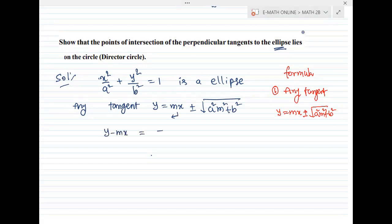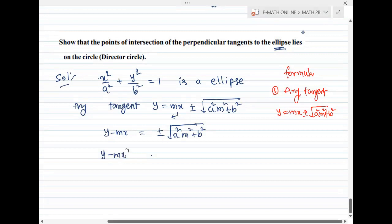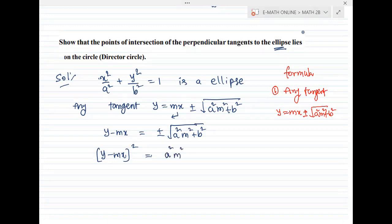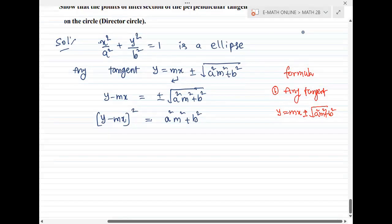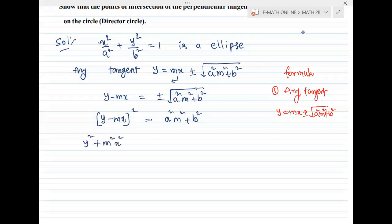So, y minus mx equal to plus or minus root of a squared m squared plus b squared. Squaring both sides: y squared minus 2mxy equal to a squared m squared plus b squared.